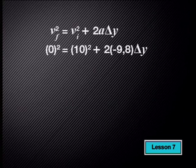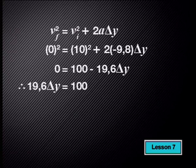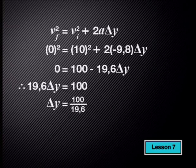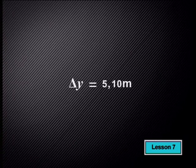Now we substitute in what we know: 0 squared equals 10 squared plus 2 times negative 9.8 times delta y. So 0 equals 100 minus 19.6 times delta y. Taking the 19.6 delta y to the left gives 19.6 delta y equals 100. Dividing both sides by 19.6, the displacement is 5.10 meters above the thrower's hand. We always round off to two decimal places.